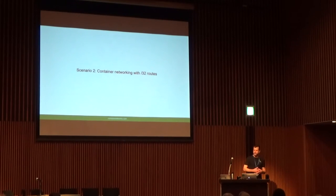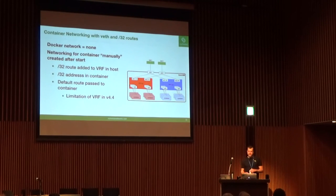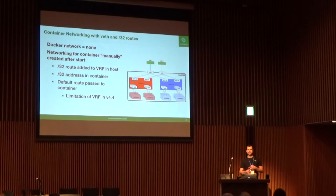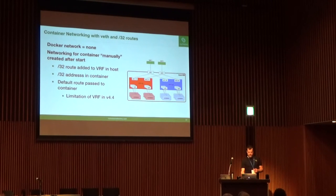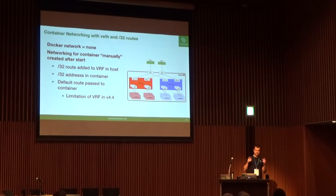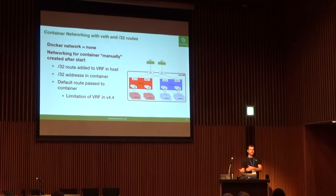The second configuration for Docker networking uses VEth pairs and slash 32 routes in the host. In this case, I'm using the Docker driver for none — so no networking config is set up at all — and I manually come behind it and create a VEth pair. I drop one end into the Docker container, put the other end into the VRF, and then manually assign a slash 32 address within the container and insert the host route into the host table. One limitation I have with VRF in the 4.4 kernel is there's no locally originated traffic to local addresses, so I have to go straight out to the leafs for the default route.